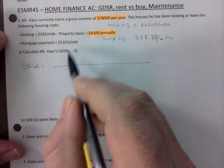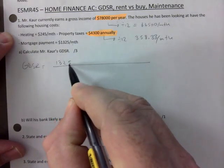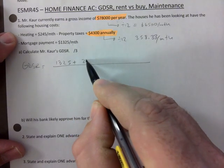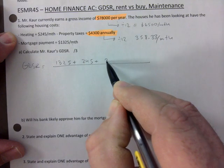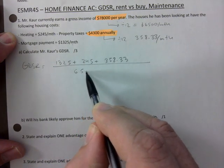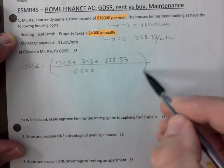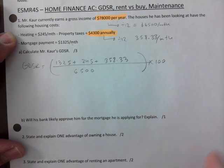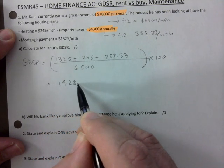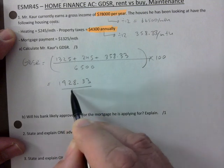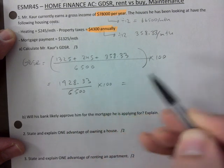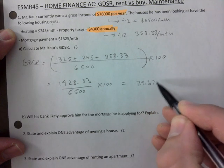Now everything is in monthly amounts, we're in business. Just plug in and go. GDSR is mortgage payment, plus heating $245, plus property taxes $358.33, all of that divided by the income. You add up the top, you get $1,928.33 over $6,500 times 100.